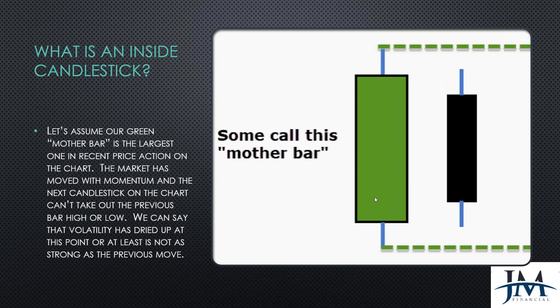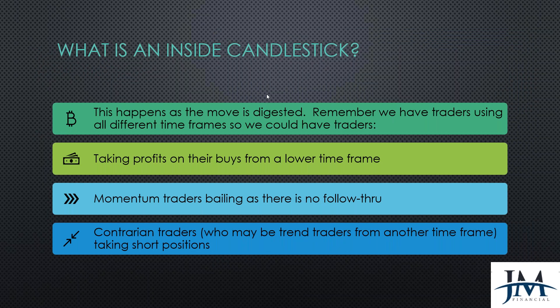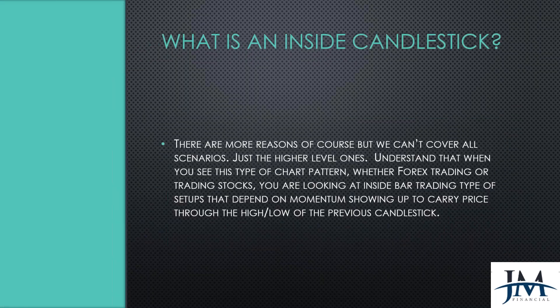If momentum was moving up and the bulls were staying in the market, we should see the next candle pushing the high higher than the previous candle — but it didn't. So something is happening with the momentum. This occurs as the move is digested. We could have traders taking profits, momentum traders bailing out as there's no follow-through, or contrarian traders from another timeframe taking short positions. There are many reasons, but we can't cover all scenarios.